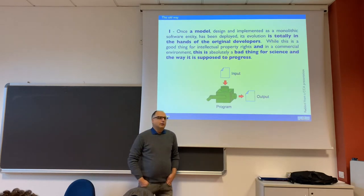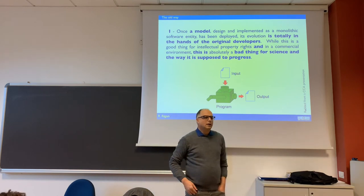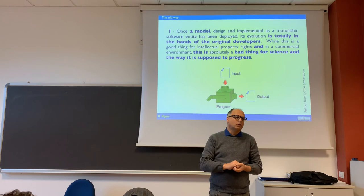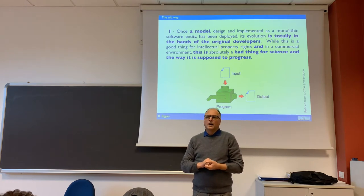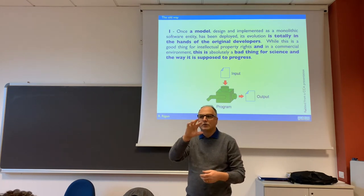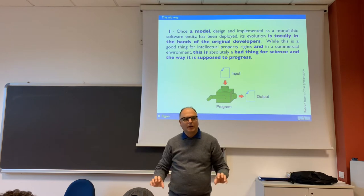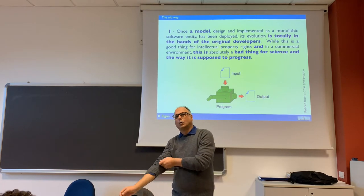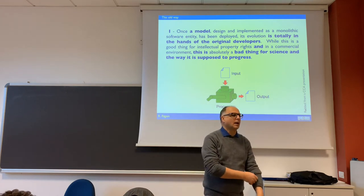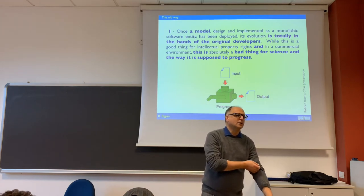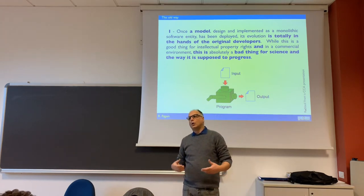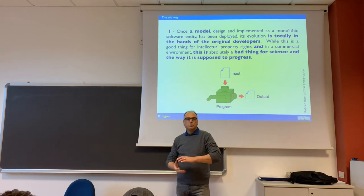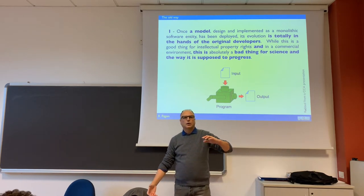Usually we need a model, we start programming our code — maybe doing some planning before on how we want to code. We have this process and that other process, many processes together. We start to write our codes in traditional languages like C, Fortran, C++, etc., but all the code is connected together.